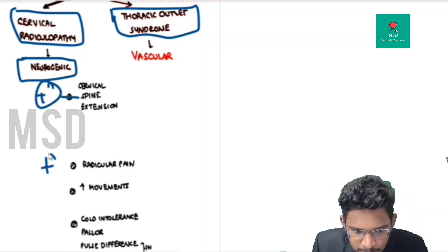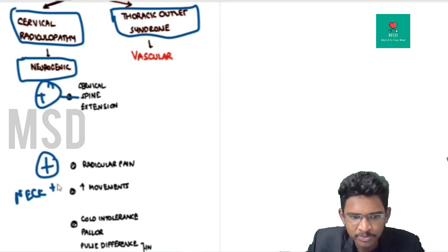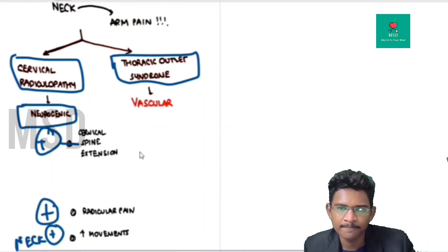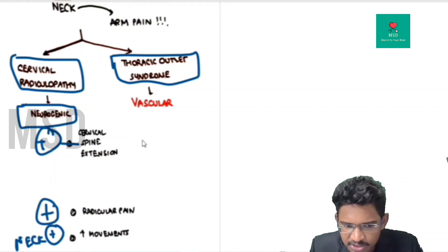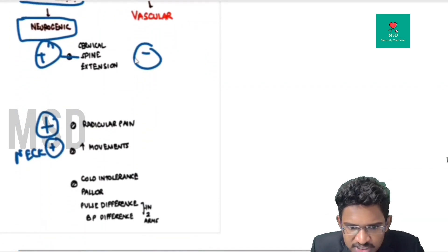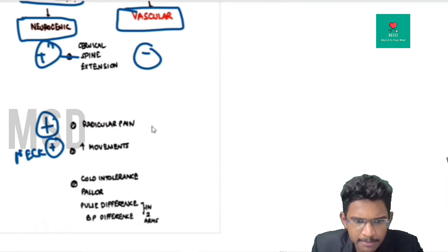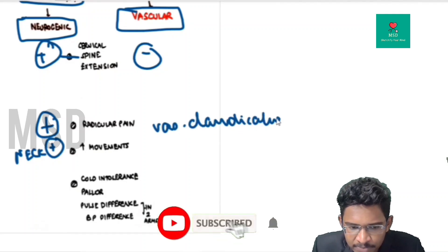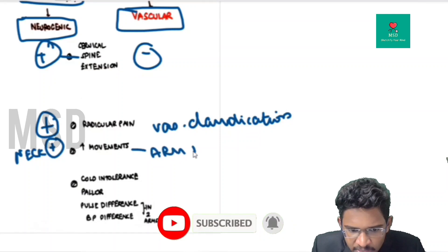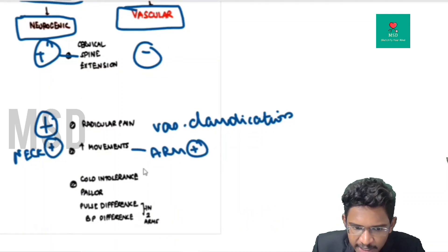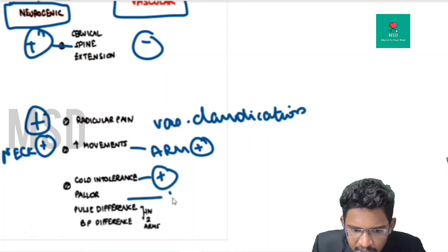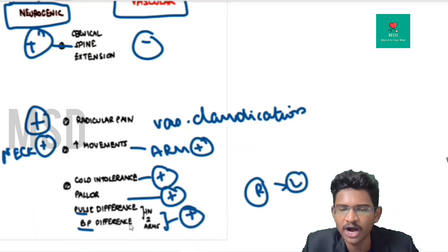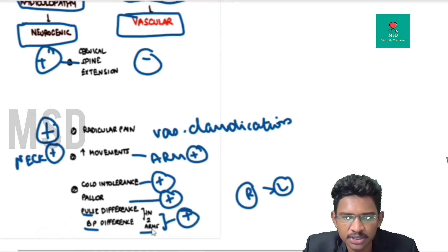In thoracic outlet syndrome, compression of vascular structures — particularly the subclavian artery — causes neck and arm pain. It is related to arm movements, not spinal extension. It may cause vascular claudication with arm use. Severe occlusion results in cold intolerance and pallor. If the right subclavian artery is more compressed than the left, there will be a pulse difference and blood pressure difference between the two arms, differentiating it from neurogenic causes.